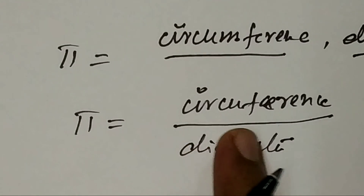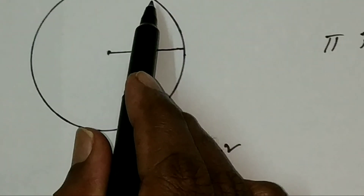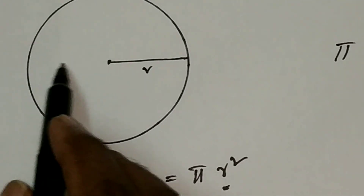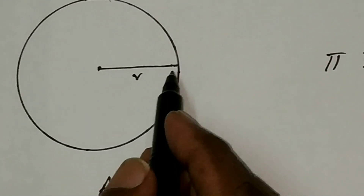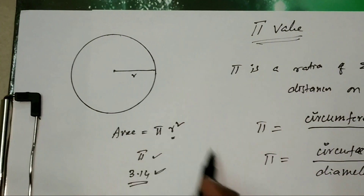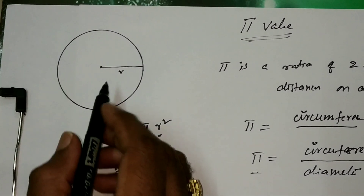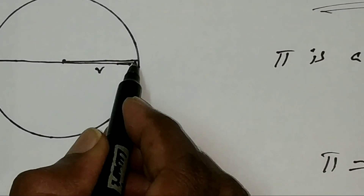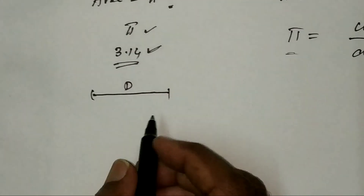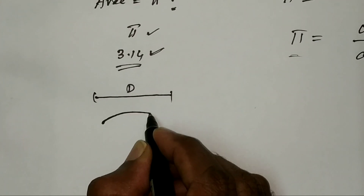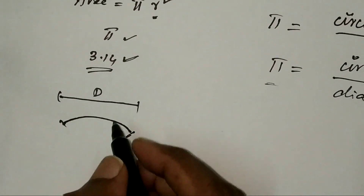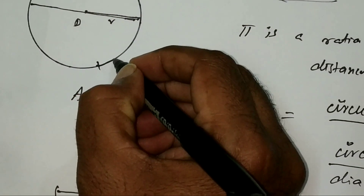The circumference is this outer boundary of the circle, and the diameter is the straight line across. So circumference divided by its diameter gives us the pi value. Now in this circle, let's take the diameter d and bend it around the circumference.